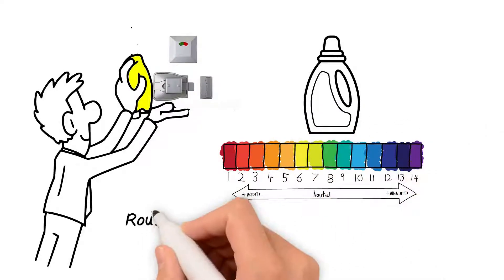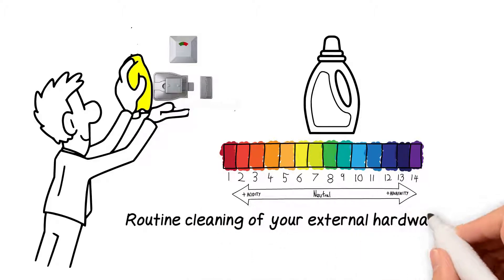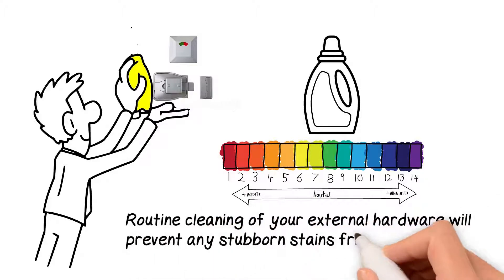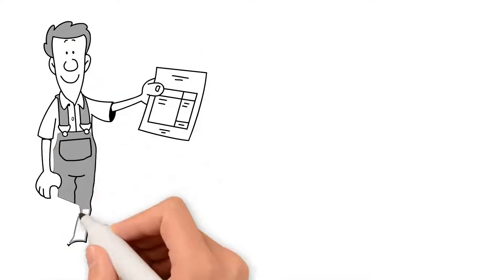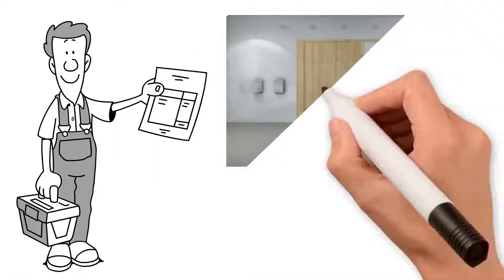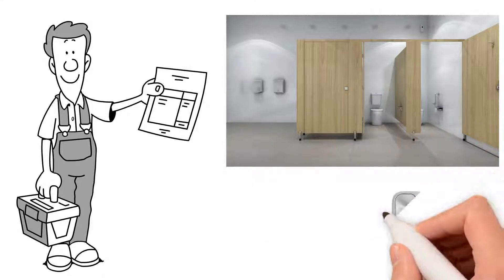Routine cleaning of your external hardware will prevent any stubborn stains from building up. To avoid scratching of your Metlam Australia toilet partition hardware, avoid dragging rough items across the surface and be aware that grit trapped under other materials can cause surface scratches.